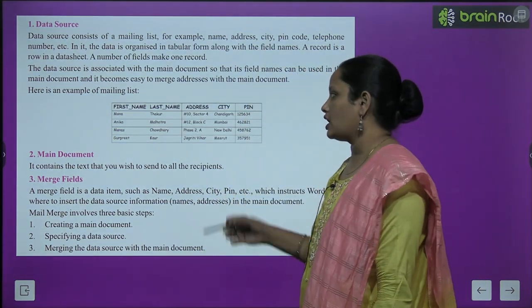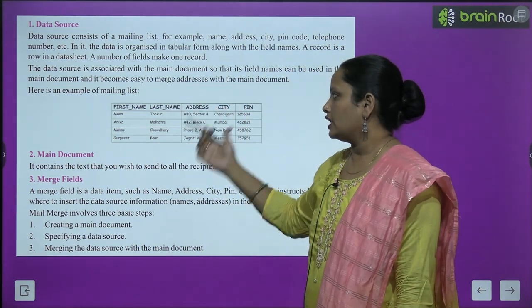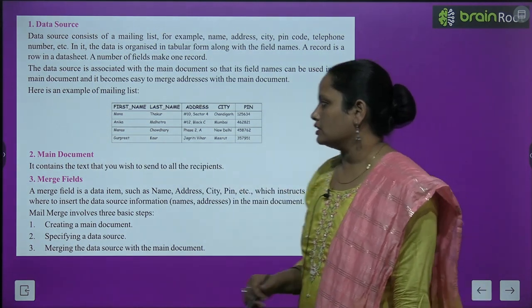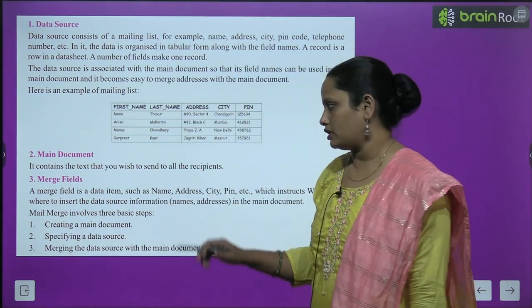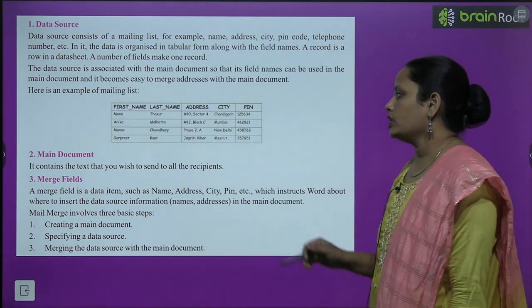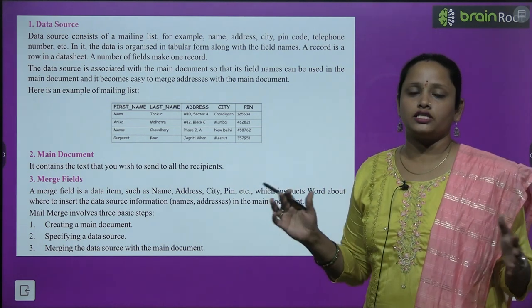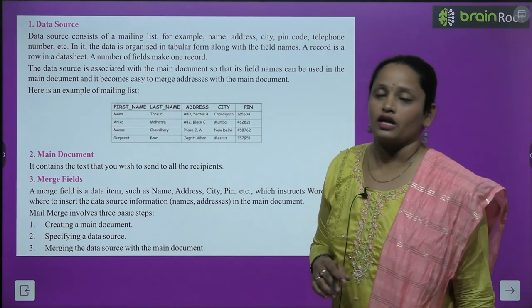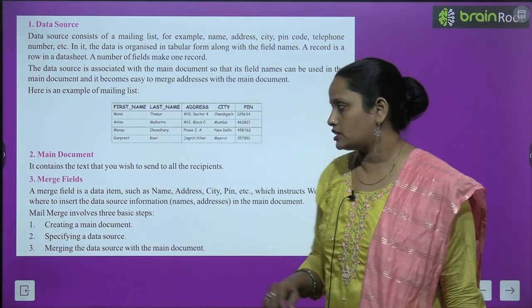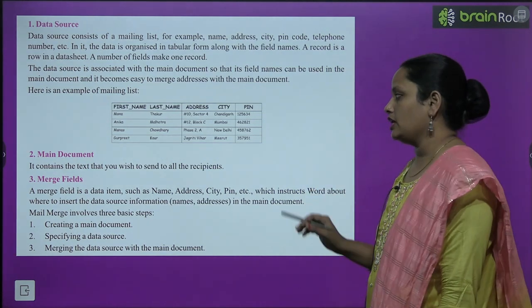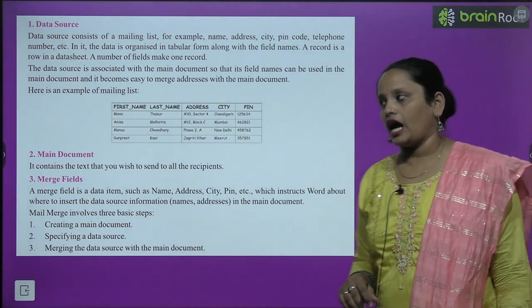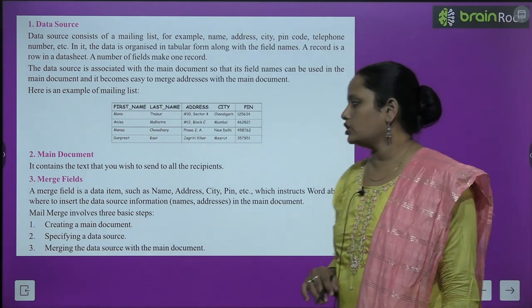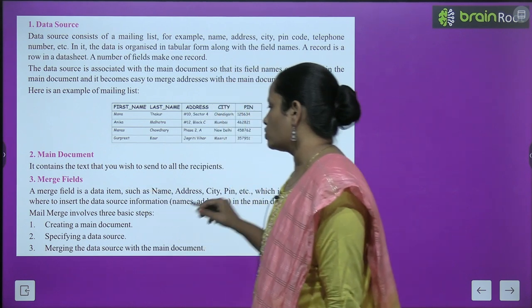Here is an example of mail merge. First name, last name, address, city, and pin code of some people are given. Next comes the main document — it contains the text that you wish to send to all the recipients. A merge field is a data item such as name, address, city, pin code, which instructs Word about where to insert the data source information in the main document.